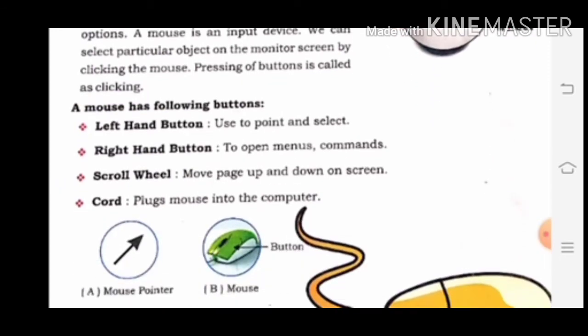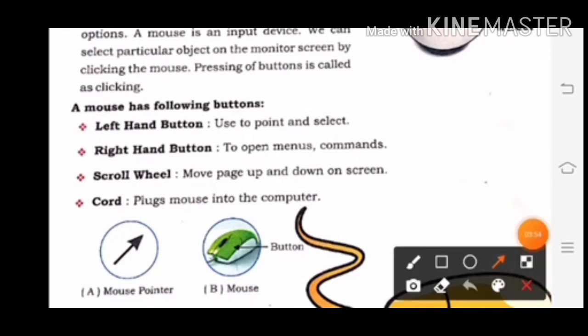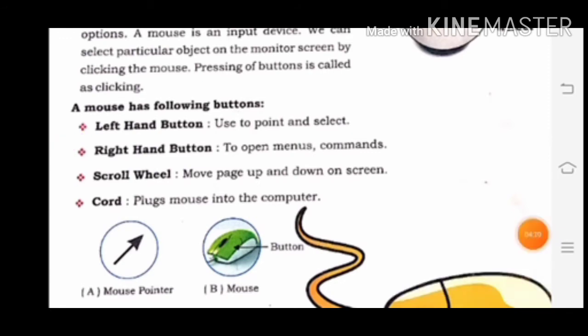A mouse has the following buttons. First, the left hand button. Left hand button का use क्या होता है? Use to point and select. Monitor की screen पर point करने के लिए और किसी भी data, information या object को select करने के लिए हम mouse के left side के button का use करते हैं।